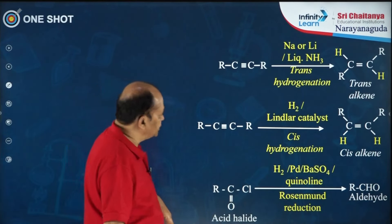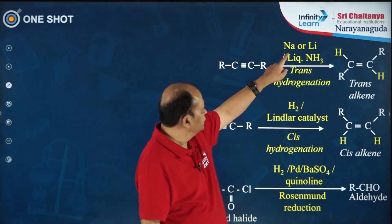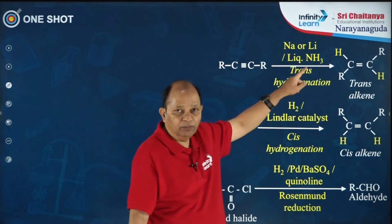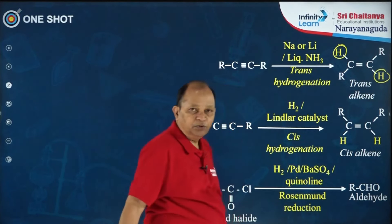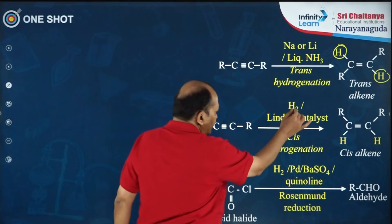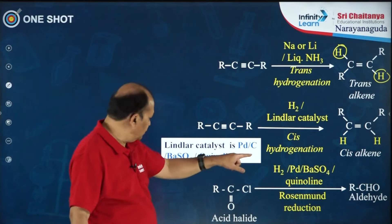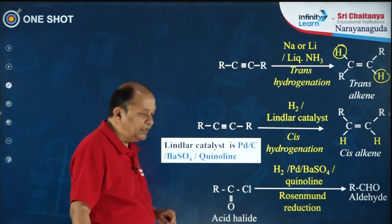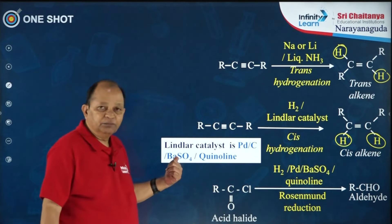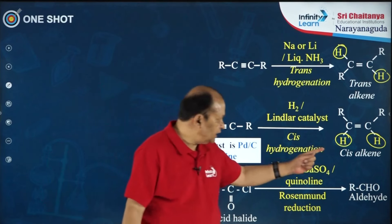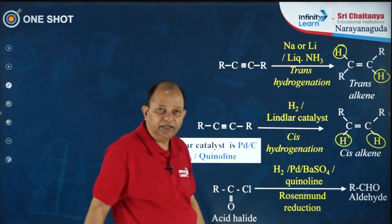Very important reactions: alkynes when reacted with sodium or lithium in liquid ammonia undergo trans-hydrogenation — you get hydrogens in the trans position. Whereas alkynes treated with hydrogen in the presence of Lindlar's catalyst (palladized charcoal or barium sulphate in the solvent quinoline) give the cis compound. Barium sulphate acts as a catalytic poison stopping the reaction before it proceeds to the alkane stage, and quinoline is the suitable solvent.